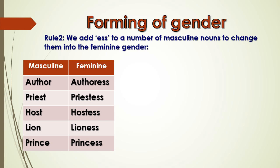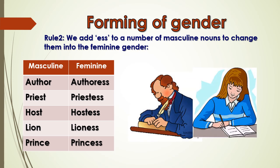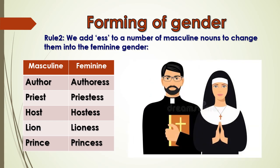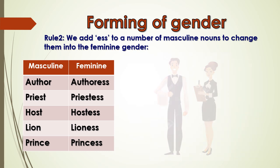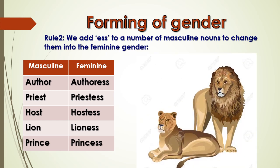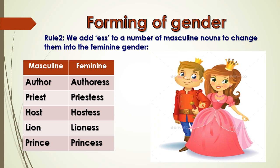In some words, we add the suffix -ess to masculine nouns to change them into feminine gender. For example: author – authoress (we added -ess at the end of author, so it becomes feminine); priest – priestess; host – hostess; lion – lioness; prince – princess.